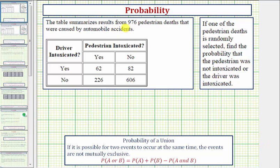The table summarizes results from 976 pedestrian deaths that were caused by automobile accidents. Notice how the table indicates whether the pedestrian was intoxicated as well as whether the driver was intoxicated. If one of the pedestrian deaths is randomly selected, find the probability that the pedestrian was not intoxicated or the driver was intoxicated.